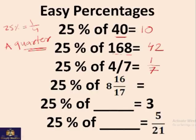25% of this thing is 2 and 4 over 17, or 2 and 4 over 11 here. The denominator doesn't change. 25% of something is 3, that something must be 4 times 3, that is 12. 25% of something is 5 over 21, that something must be 4 times this, so it's 20 over 21.